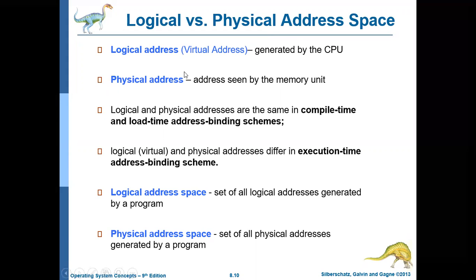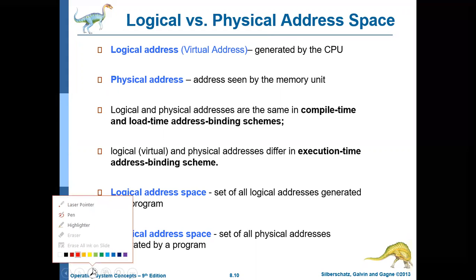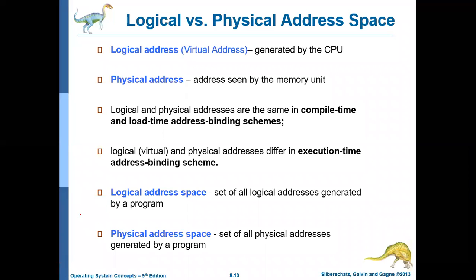The addresses that are generated by the CPU are called as logical address space, and these are also the addresses that are used in the program. The user program knows only about logical address. Logical addresses are otherwise called as virtual addresses because these are not the actual physical addresses.